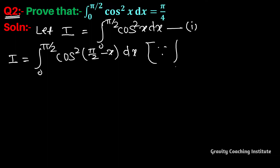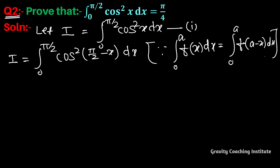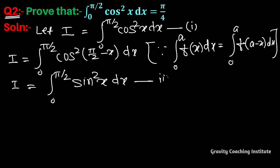The property used here is: the integral from 0 to a of f(x) dx equals the integral from 0 to a of f(a − x) dx. So I equals the integral from 0 to π/2 of cos(90° − x), which is sin²x dx. Suppose this equation is second.